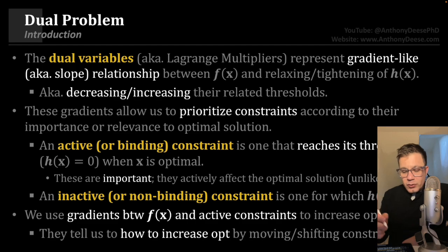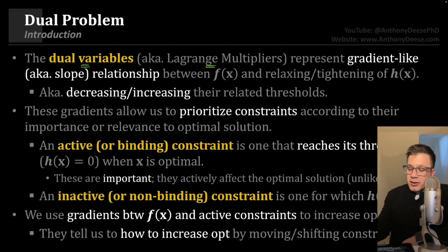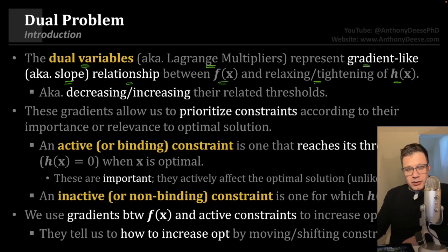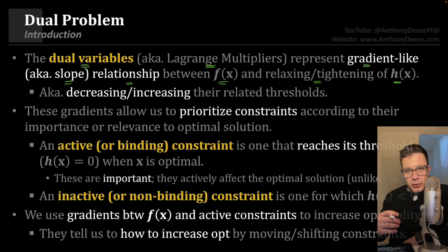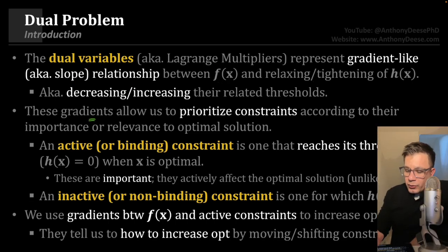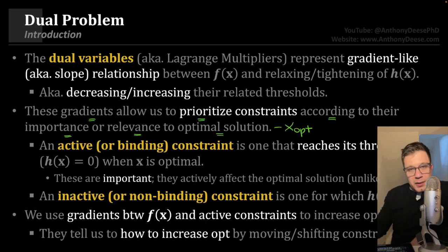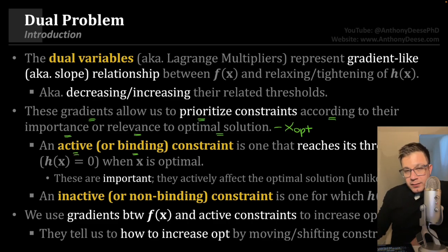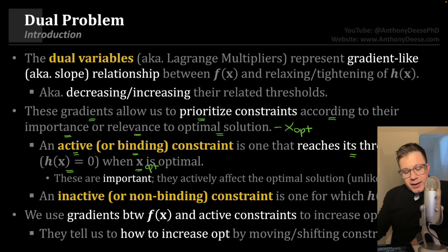In the next module, number five, we're going to break it down at a much more granular level, where you'll see that there is actually an order in which we apply optimization with respect to the primal and the dual variables. The dual variables — which are really the same thing as the Lagrange multipliers — represent a gradient-like, slope-like relationship between our objective function f of x and the relaxing or tightening of our inequality constraints h of x. When we say relaxing or tightening, we mean decreasing or increasing the related thresholds. These gradients allow us to prioritize constraints according to their importance or relevance to the optimal solution, which I'll refer to as x-opt. There are two categories: active or binding constraints, where h of x equals zero when x is optimal.